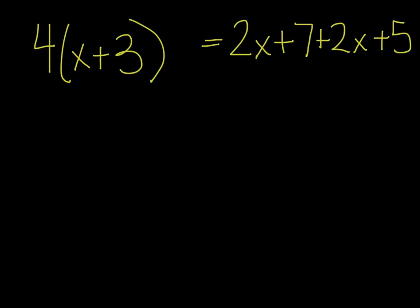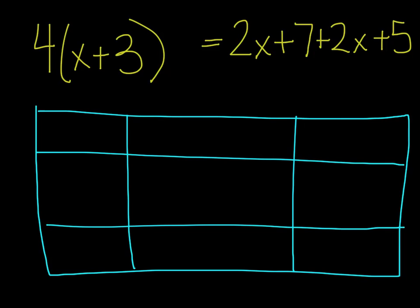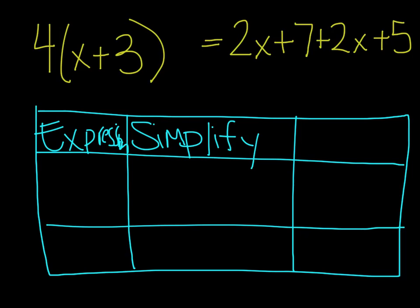Now on the bottom of your notes you'll notice there's a table that says Expression, Simplify, and Explanation, with two rows under each. I'm going to draw the table here — yours is already ready to go. And then I'm going to put 'explain' here instead of 'explanation' just to shorten it up.